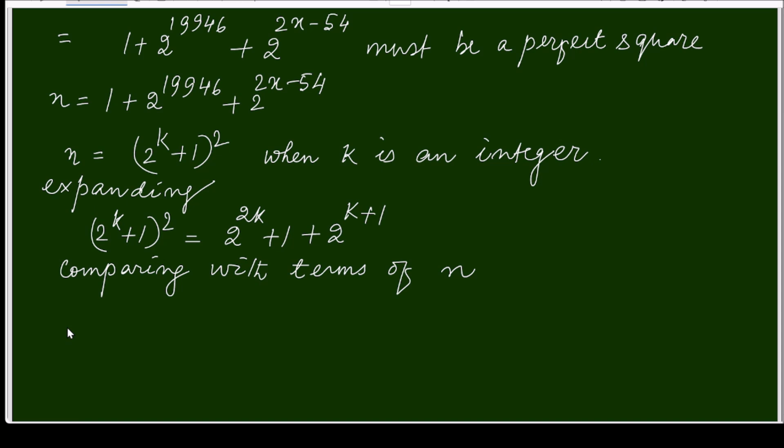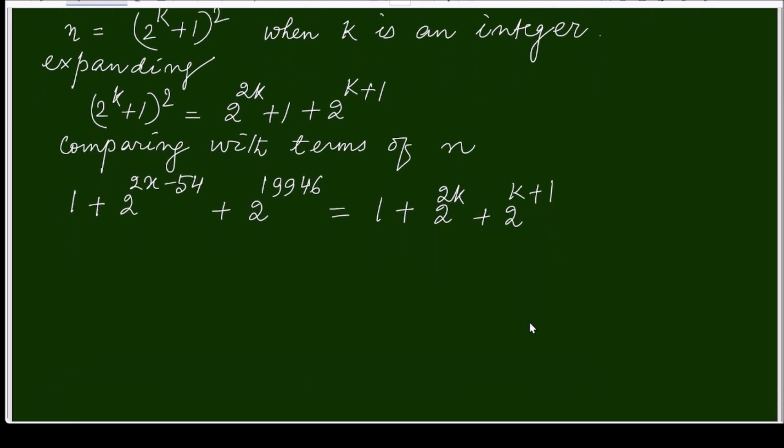n is 1 + 2^(2x-54) + 2^19946, and here it is 1 + 2^(2k+1) + 2^(k+1). So this middle term is compared with n.